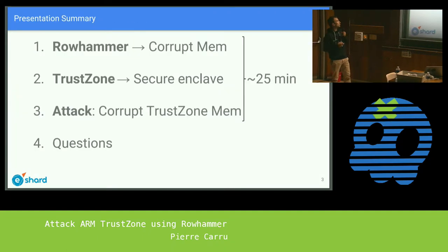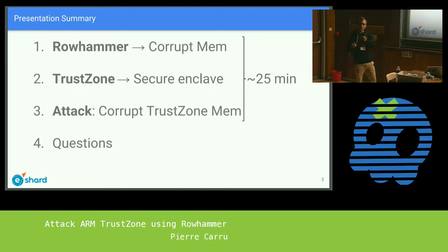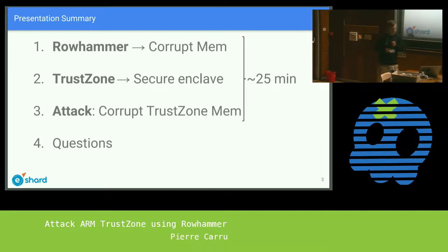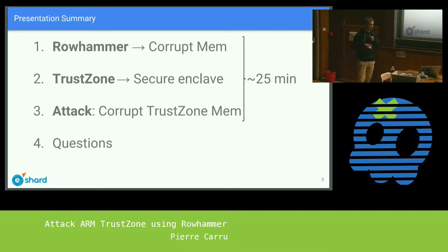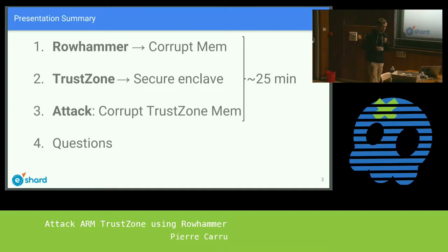What is Rowhammer? It's an attack technique used to corrupt RAM that's been around for a few years. What is TrustZone? It's a security technology that's in most ARM processors nowadays. We'll use Rowhammer in order to target the TrustZone implementation in a system. TrustZone is in every Android-based smartphone we use nowadays, so it's quite ubiquitous.